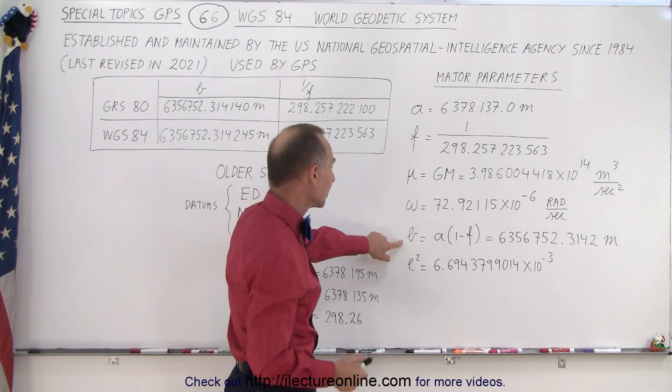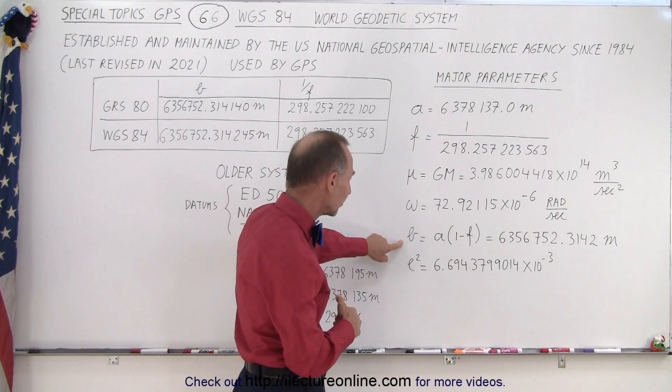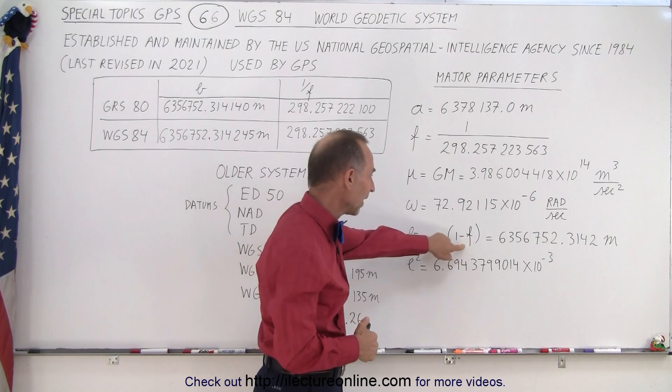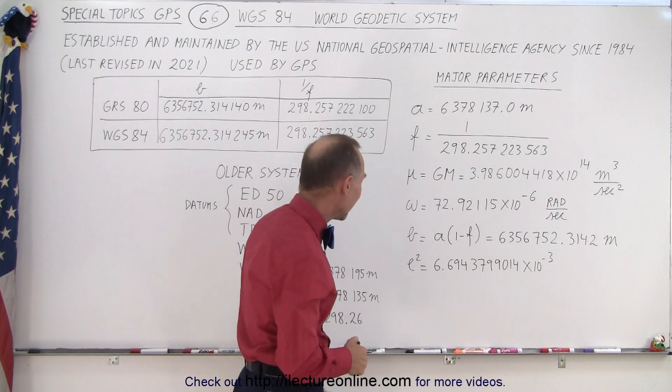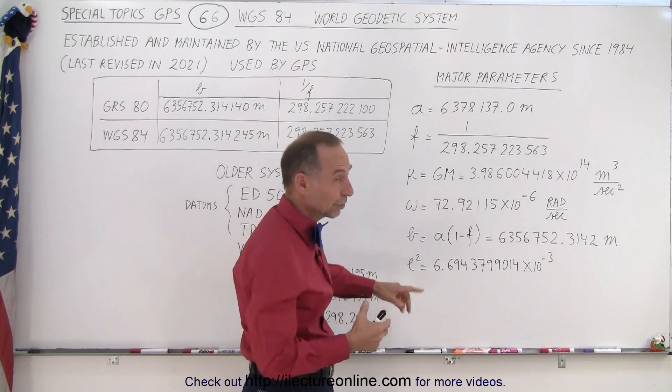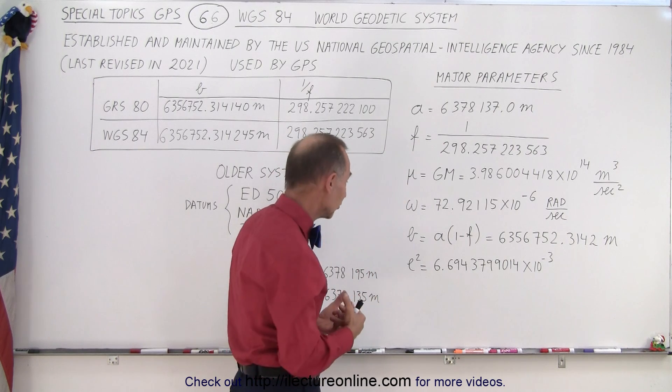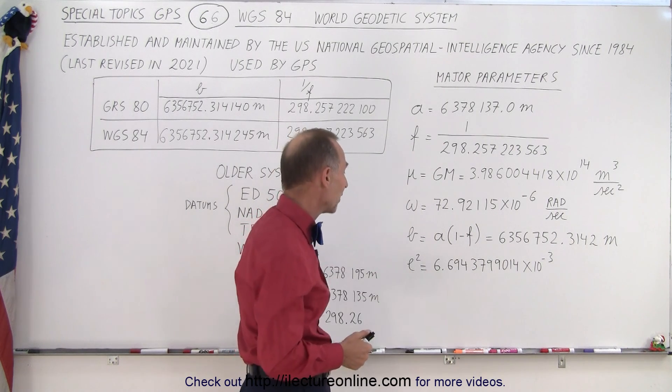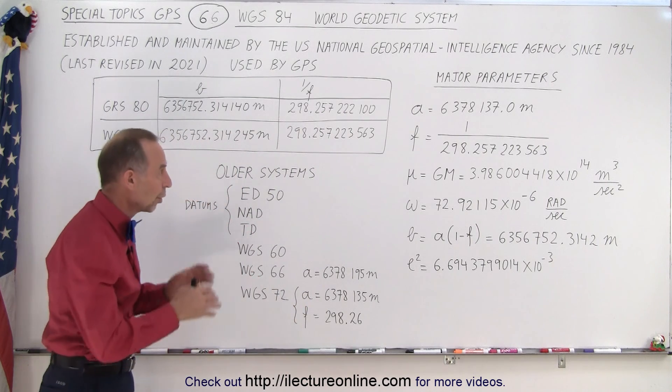And we can calculate the semi-minor axis based on the semi-major axis and the flattening to be equal to this. And then we have the eccentricity squared, another parameter that's very important in GPS. And here again we have the eccentricity established to a very accurate number.